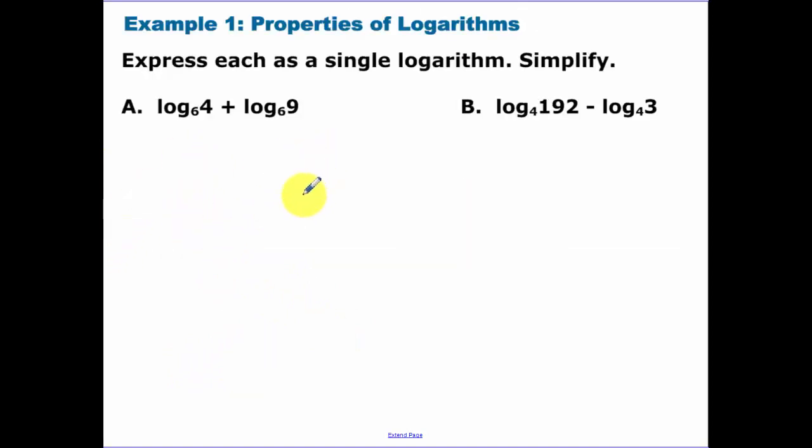Express as a single logarithm and simplify. Because I don't know what power 6 to what power gets me 4 and 6 to what power gets me 9. But under addition, I can combine those in one logarithm and multiply the 4 times the 9 to get 36. Now we're going to be able to evaluate that. 6 to what power gets me 36? Well, that is going to be the second power. So notice how now when I combine my logarithms into one logarithm, I'm able to find the value.